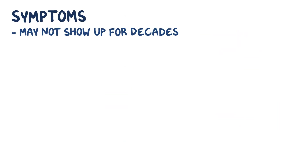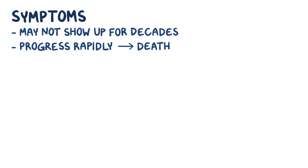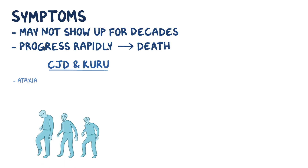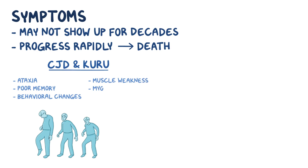Symptoms of spongiform encephalopathy might not show up for decades after prions have entered or formed in the body, but once symptoms start developing they tend to progress rapidly, resulting in death within a year. Early symptoms for Creutzfeldt-Jakob disease and kuru involve motor symptoms like ataxia, which is defined as lack of coordination of voluntary muscles, and neurological symptoms like poor memory and behavioral changes. Later stage symptoms include muscle weakness that makes it difficult to walk or stand, and myoclonus, which is quick, jerky movement of the muscles.